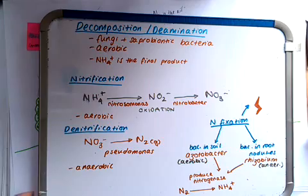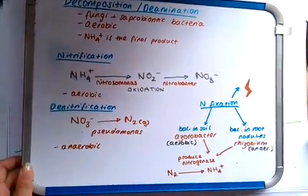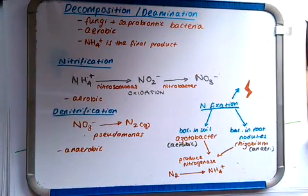And finally, you need to remember nitrogen fixation. This can occur through lightning, through bacteria in the soil, or through bacteria in the root nodules. And bacteria in the soil and root nodules both produce the nitrogenase enzyme, which catalyzes the process of nitrogen in the air to ammonium.